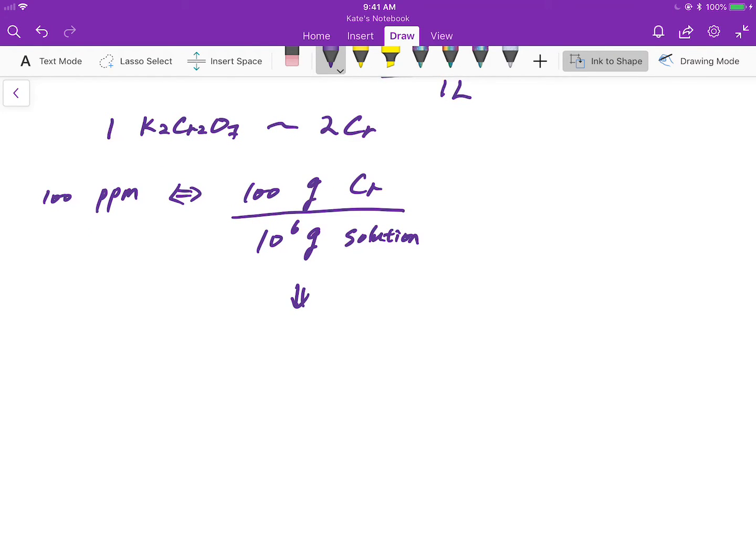From here we can calculate 100 grams chromium and convert that to moles because we can use this ratio. For every mole of chromium, there's 52 grams.